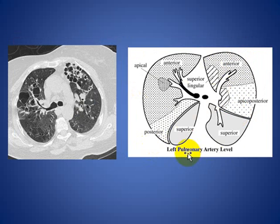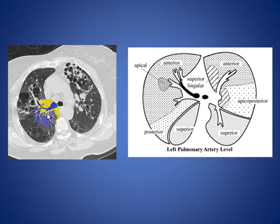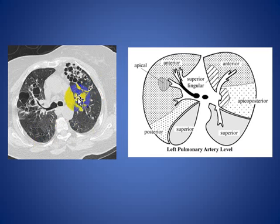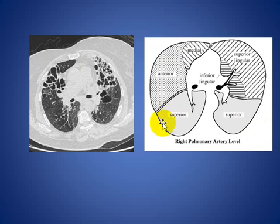At Level 3, at the left pulmonary artery, you can see the left pulmonary artery, the right main bronchus, left main bronchus, and the upper lobe bronchus. The fissure is visible, indicating the upper lobe ends at this level. Here we see the anterior segment of the right upper lobe, the posterior segment of the left upper lobe, and the superior segment of the left lower lobe. The left upper lobe is divided into anterior and posterior segments at this level.